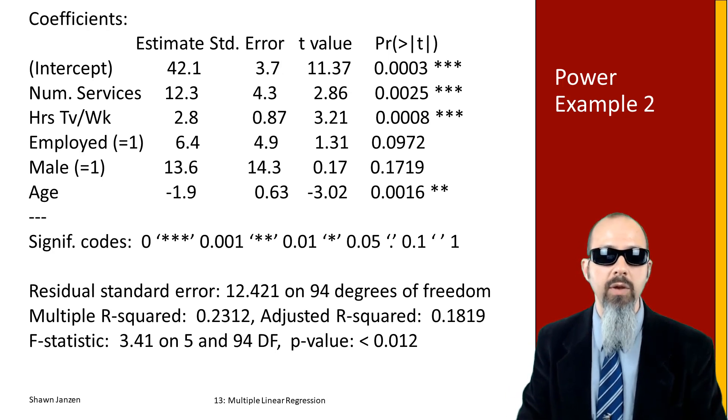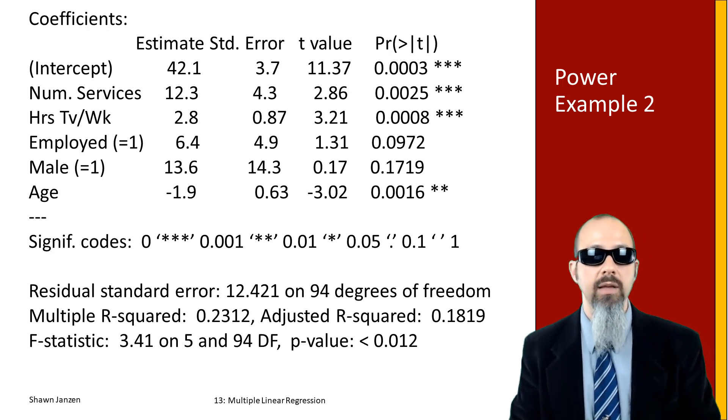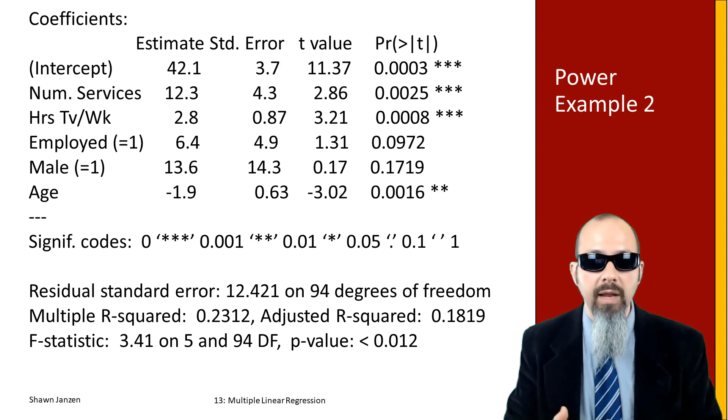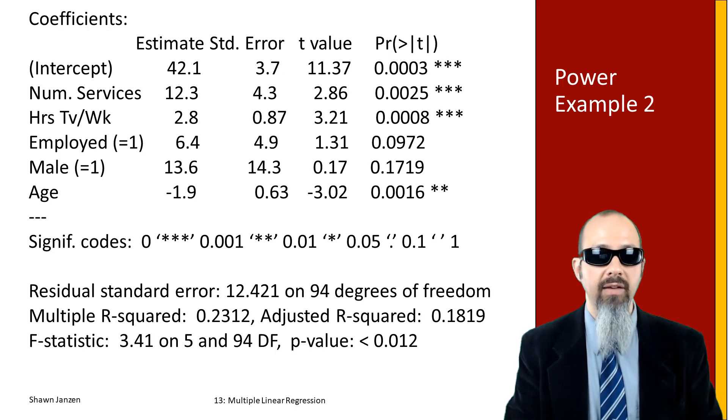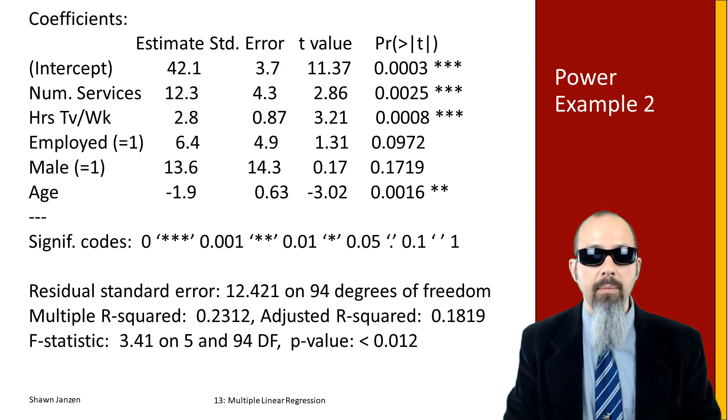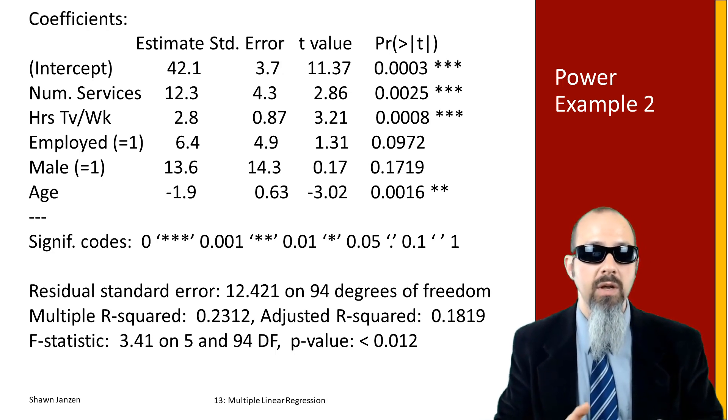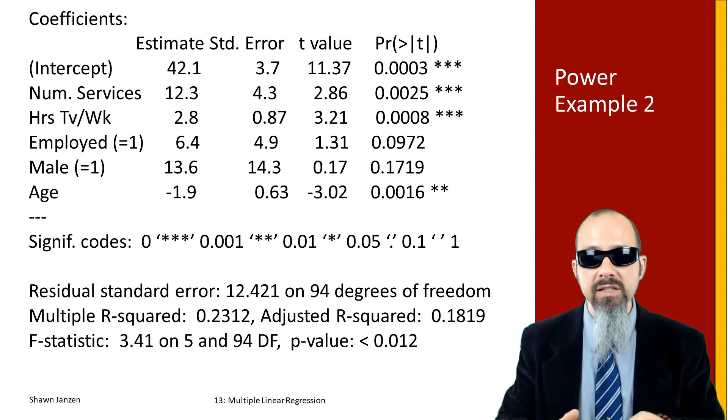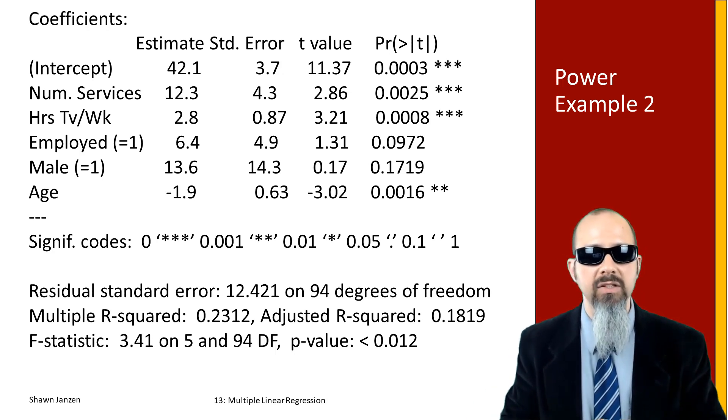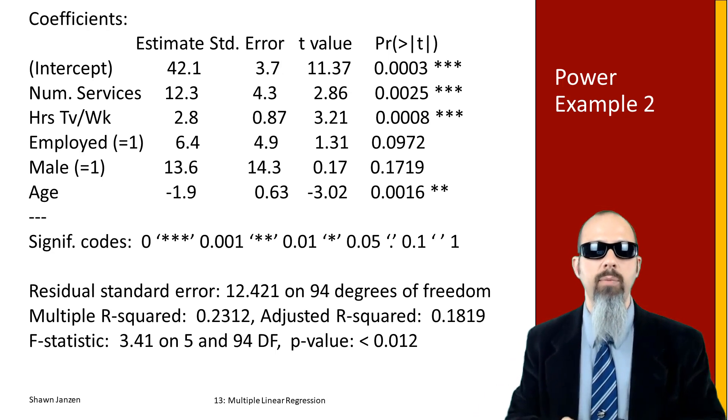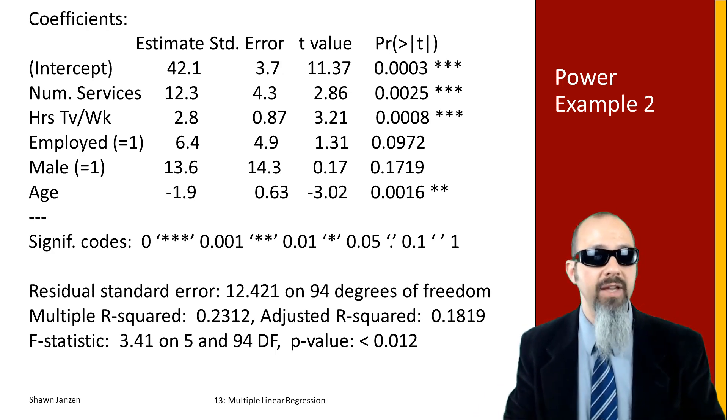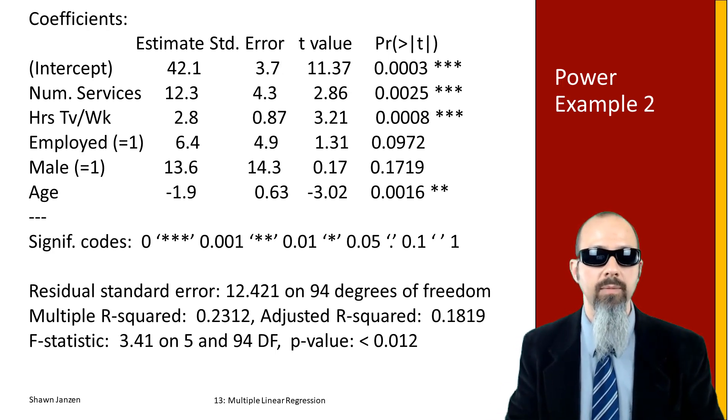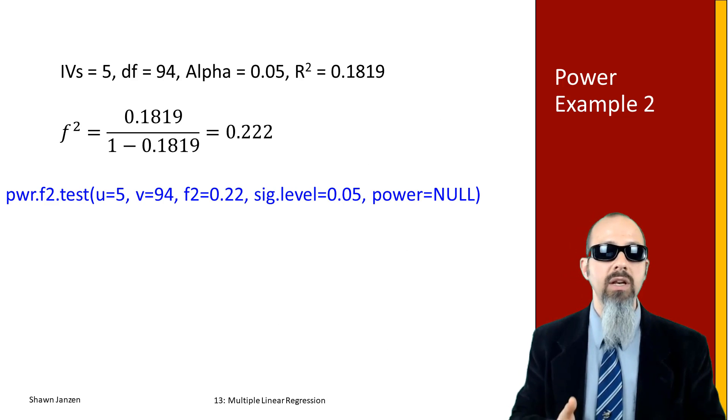In this particular case, I have 94 degrees of freedom. My multiple r² was about 0.23, but my adjusted penalized the fact of having so many variables in the model, so it's only about 0.18. I also have five independent variables in the model.